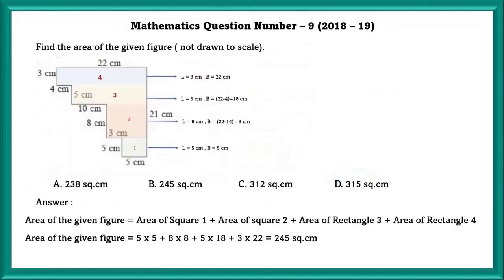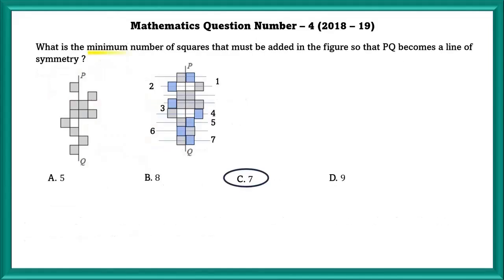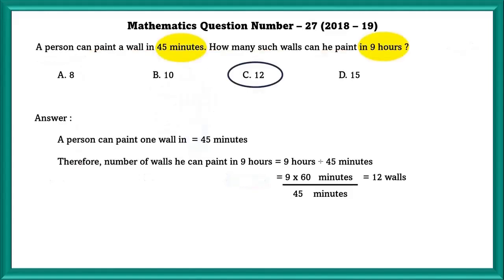Similarly, in this they have asked the area of the given figure. In this we can divide these as squares and rectangles. Here they have asked minimum number of squares that must be added in the figure, not shaded, not unshaded, but added in the figure. So you should be careful whether they have asked added, unshaded, or shaded.